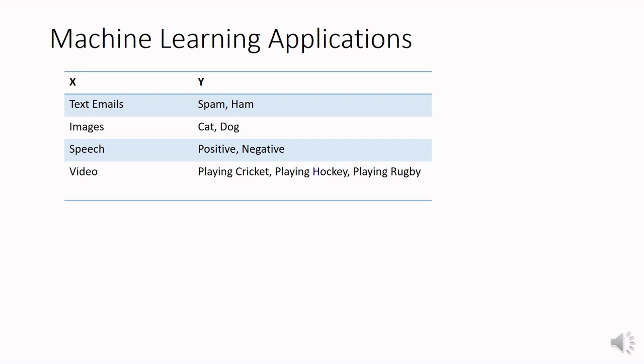Last type of input that machine learning application may get is video. Videos are there and inside that video we have to classify whether that particular person is playing cricket, hockey, or rugby. So this is a multi-class classification problem. Multiple classes are there and we have to classify that video in corresponding classes.